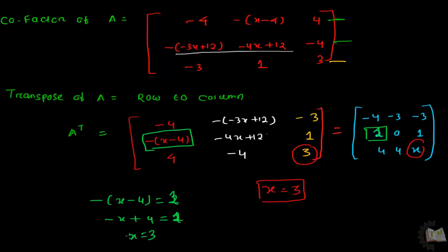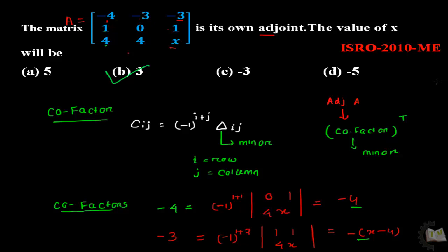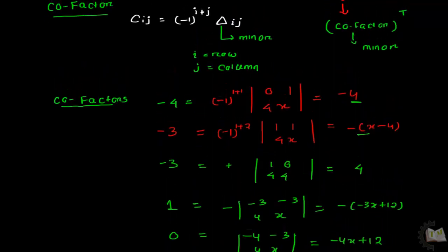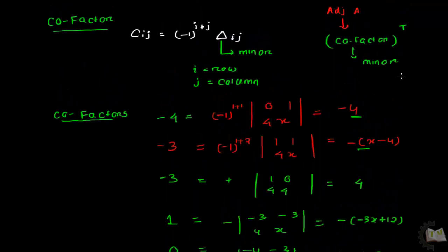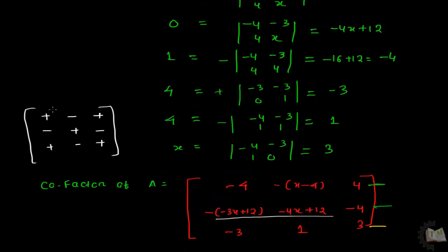So the answer is x equals 3, which is option B. This type of question takes a lot of time, but you can save time by using a simple process: first calculate the minor of each element — that is, calculate the determinant — then assign the sign using the pattern positive, negative, positive, negative, positive, negative, positive, negative, positive, according to the position of the term. This gives the cofactor directly.